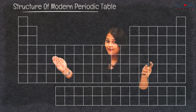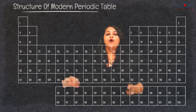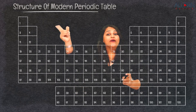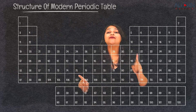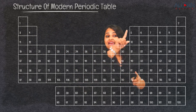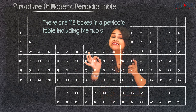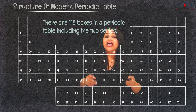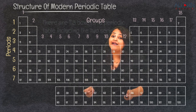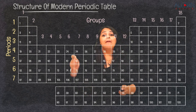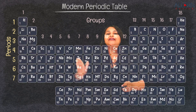The modern periodic table groups and periods were completely filled with elements — in total, 118 elements in their increasing order of atomic number. All 118 boxes, including the two series at the bottom, were filled with elements, particularly in the groups and in the periods.